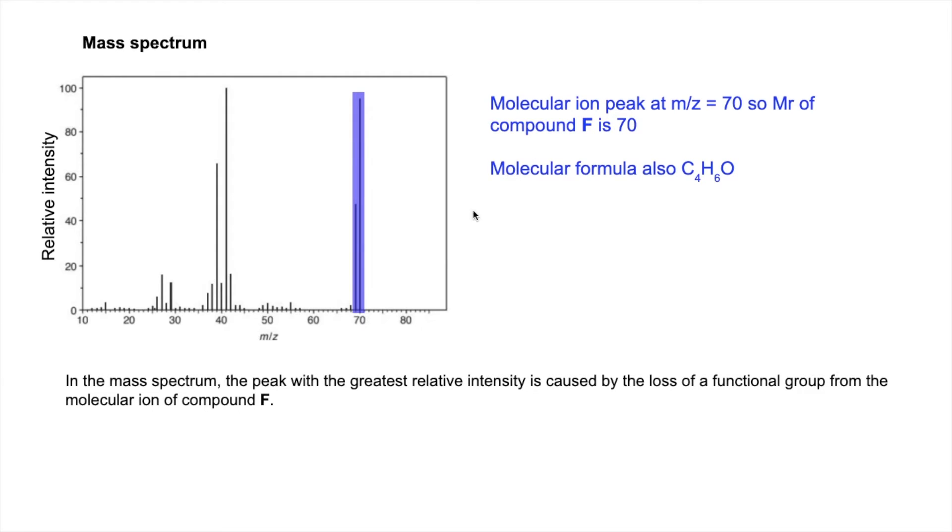The next thing we're told is in the mass spectrum, the peak with the greatest relative intensity, this one here, is caused by the loss of a functional group from the molecular ion of compound F. So basically a functional group breaks off the molecule and creates this peak here.